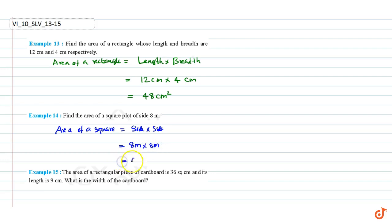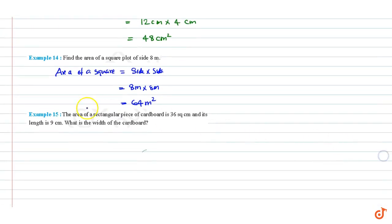This equals 64 meters squared. Example 15: The area of a rectangular piece of cardboard is 36 square centimeters and its length is 9 cm. What is the width of the cardboard?